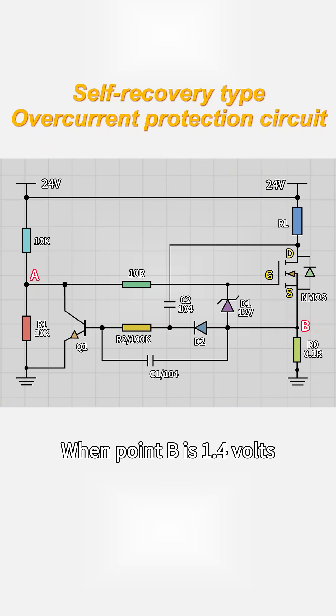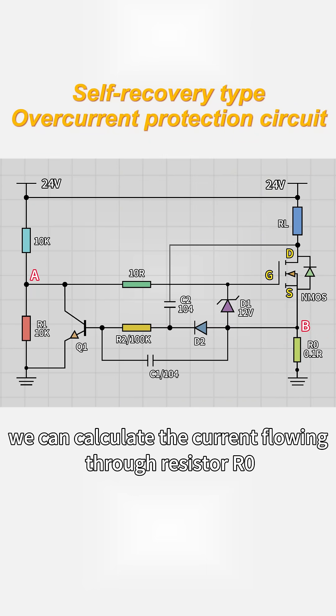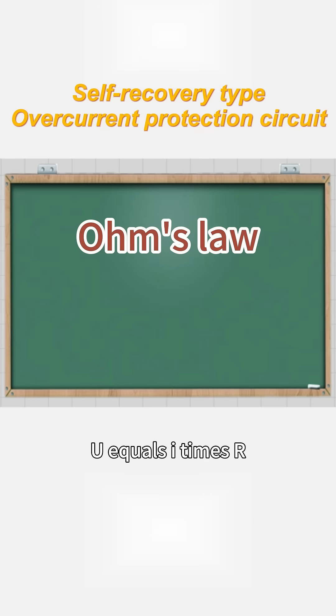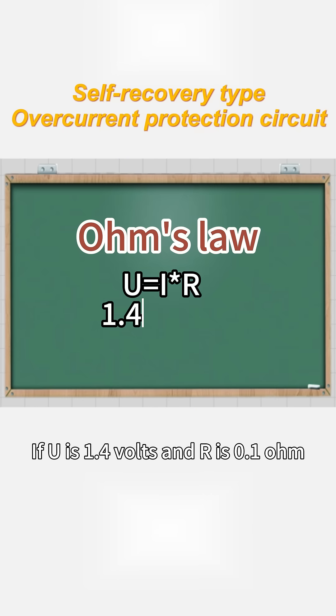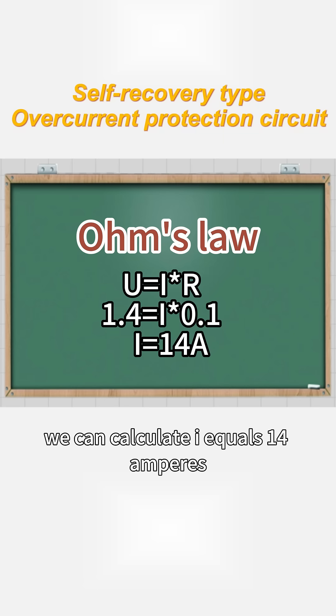So what is its current limit? When point B is 1.4V, we can calculate the current flowing through resistor R0. Using Ohm's law, U equals I times R. If U is 1.4V, and R is 0.1 ohm, we can calculate I equals 14A.